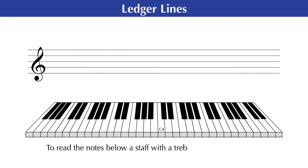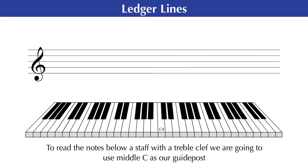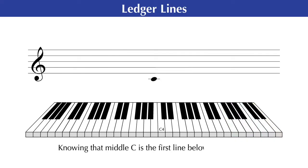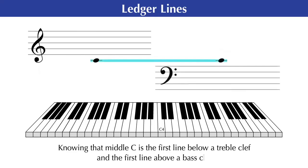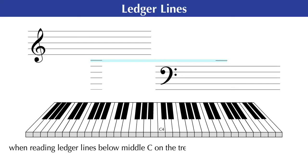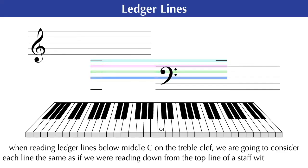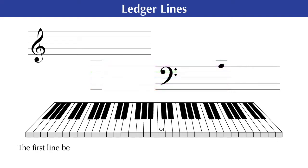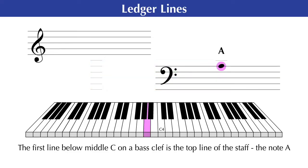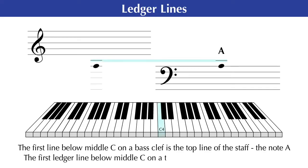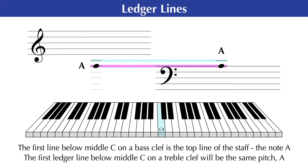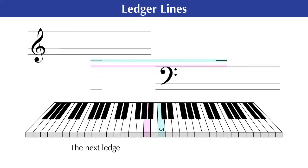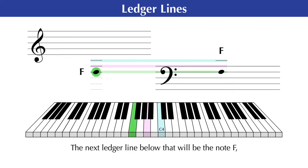To read the notes below a staff with a treble clef, we are going to use middle C as our guidepost. Knowing that middle C is the first line below a treble clef and the first line above a bass clef, when reading ledger lines below middle C on the treble clef, we are going to consider each line the same as if we were reading down from the top line of a staff with a bass clef. The first line below middle C on a bass clef is the top line of the staff, the note A. Therefore, the first ledger line below middle C on a treble clef will be that same pitch, A. The next ledger line below that will be the note F, then the note D, and so forth.